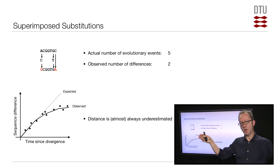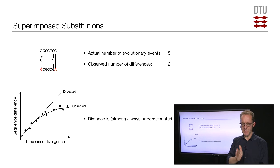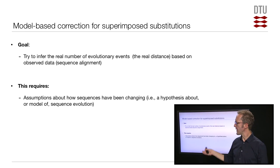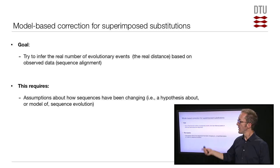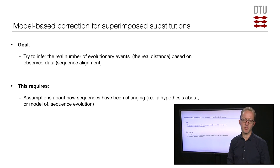Imagine you have a 100-nucleotide piece of DNA and you randomly select 60 positions to mutate. There is a possibility that all 60 mutations hit different sites, but there's a rather large probability that you will occasionally hit the same site more than once. Using fairly simple mathematics, you can start thinking about how many different sites you are likely to hit. The bottom line is that, given the observed distance, we can start thinking about what the most likely real distance between sequences is.